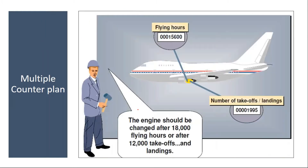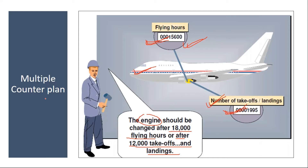Another example: say you have an aeroplane. The aeroplane engine has to be changed after 18000 flying hours or after 12000 takeoffs and landings, whichever is earlier. So you are considering two counters: number of flying hours or number of takeoffs and landings. Either based on flying hours or takeoffs and landings, whichever is earlier — that means two counters, multiple counters. In that case you have to go for multiple counter plan.